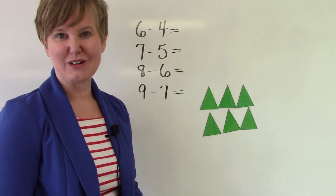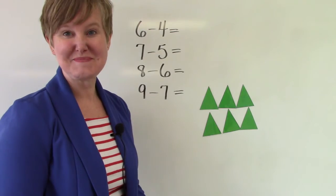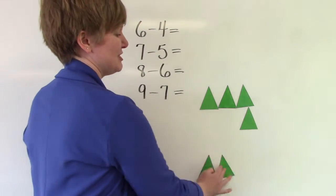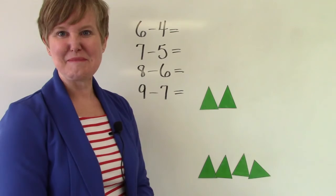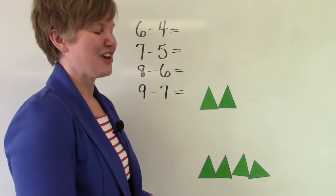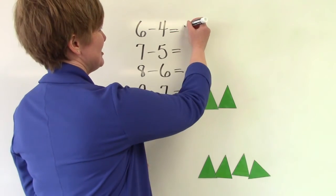We have six triangles and how many are we taking away? Four. One, two, three, four. How many are left there? You're right. It is two.